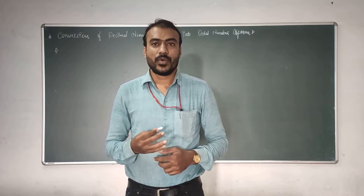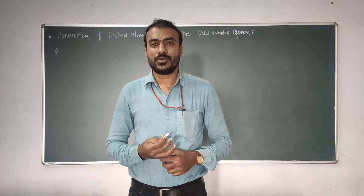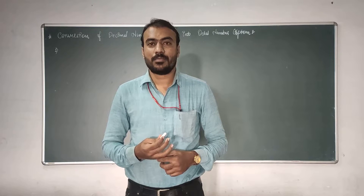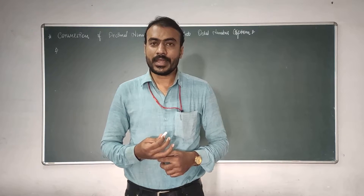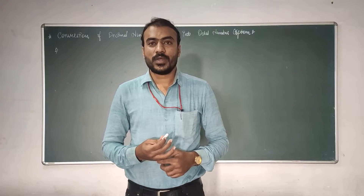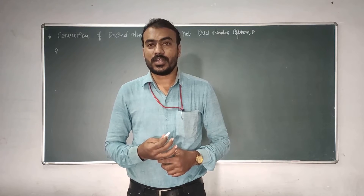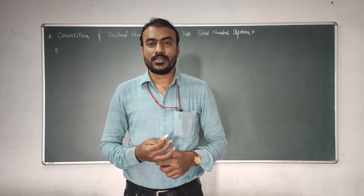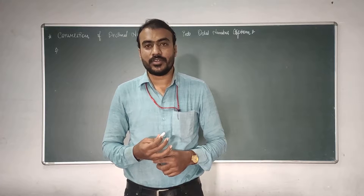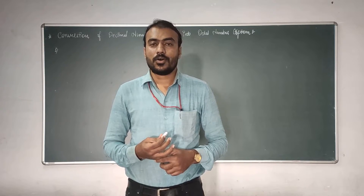Similarly, whenever we are going to convert a decimal number into octal number, we are going to divide the integer part of a decimal number by 8 and multiply the fractional part by 8. The reason is the same — the base value of octal is 8. So whenever a decimal number is converted into octal, it has to be divided or multiplied by 8.